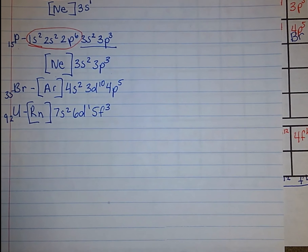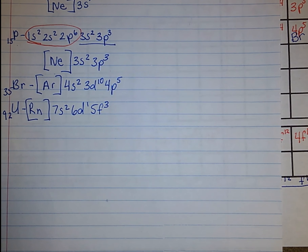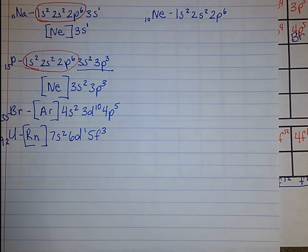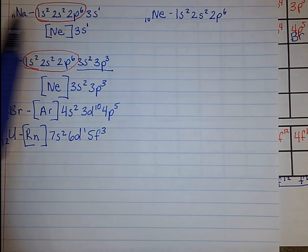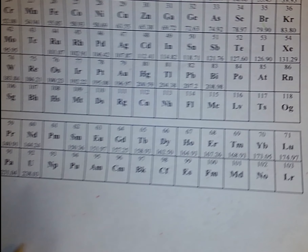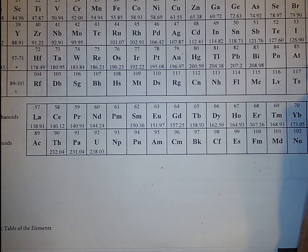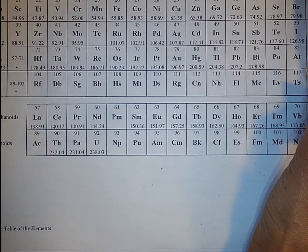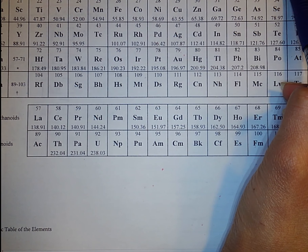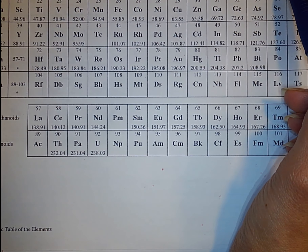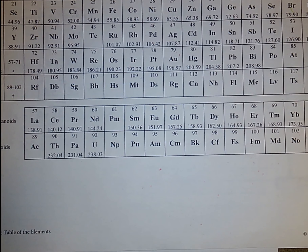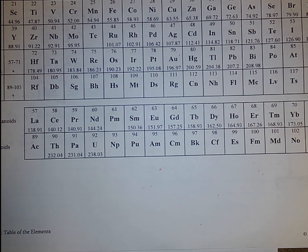For orbital notation, you will always use the noble gas notation. For elements that come before neon where you cannot use noble gas notation, you would simply use the electron configuration and then do your orbital notation from that. The reason we don't use full electron configuration for orbital notation is because it gets really messy when we get further down the periodic table.